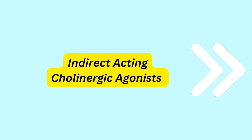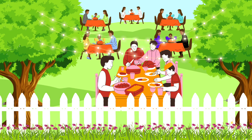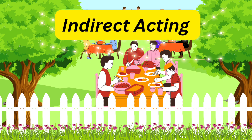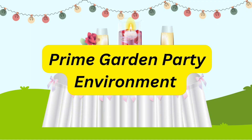Next we'll learn about indirect acting cholinergic agonists. Here is a prime garden party going on in a beautiful garden, and this environment of a prime garden party is going to give us a mnemonic for indirect acting cholinergic drugs. Indirect acting cholinergic drugs can be reversible or irreversible.